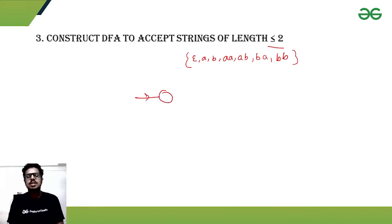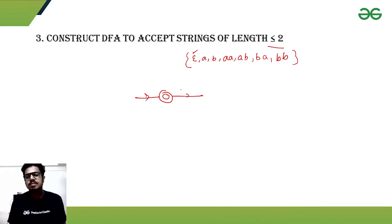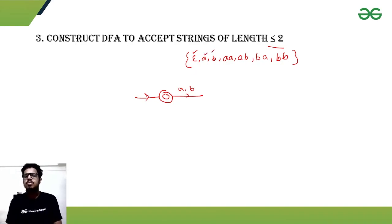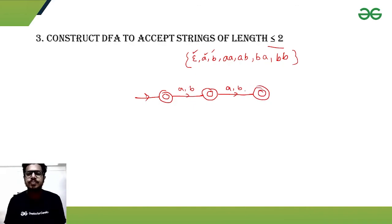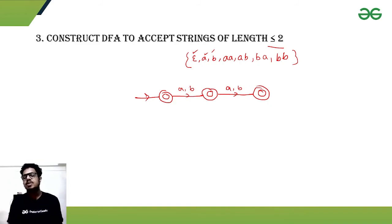For this DFA, since null is accepted, the initial state will be a final state. After reading one symbol 'a' or 'b', the single-symbol strings are also accepted, so this intermediate state will also be a final state. After reading another symbol, we reach a third state for length-2 strings. Again, the problem arises that this is not yet a DFA, because we don't know what happens in the final state when 'a' or 'b' is received.